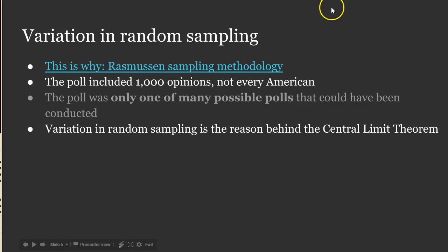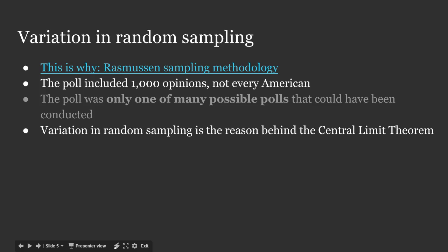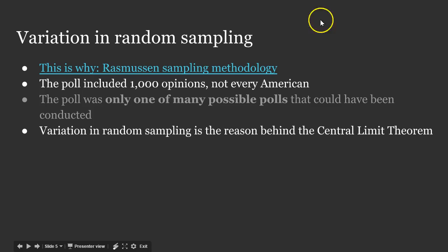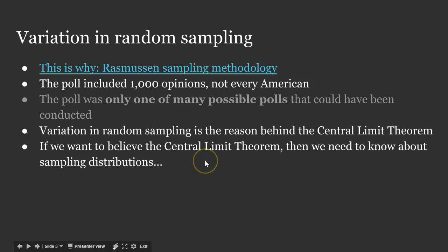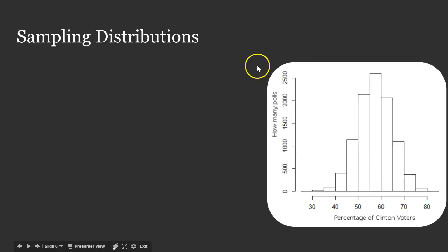Variation in random sampling is the reason behind something called the central limit theorem. The central limit theorem is important if we want to understand how the most important statistical processes work. And if we want to believe that the central limit theorem holds true, then we need to know about something called sampling distributions. So let's look at that first, and then we'll talk more about the central limit theorem in a minute.